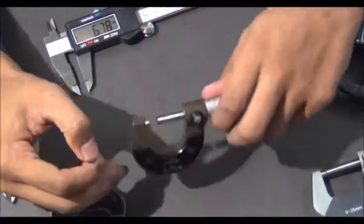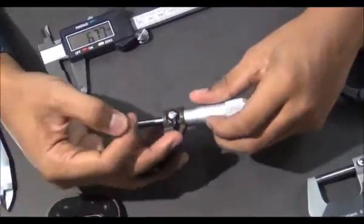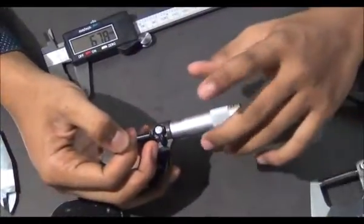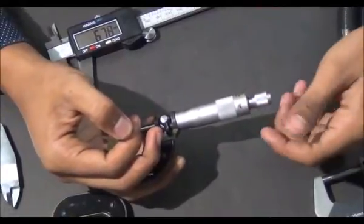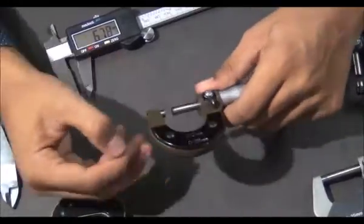Next is the micrometer screw gauge or MSG. This is the thimble, the sleeve, and the ratchet to avoid excessive pressure on the object.